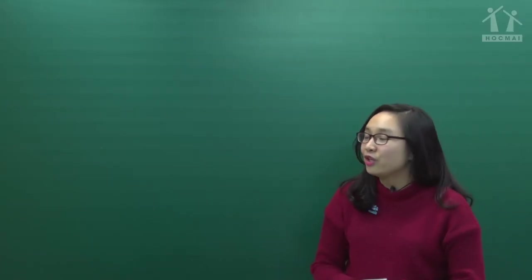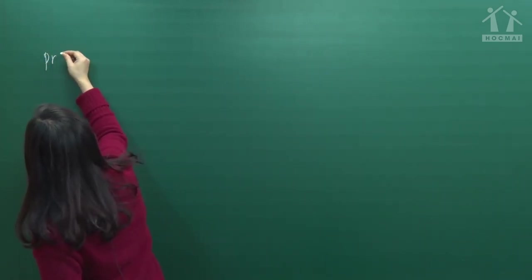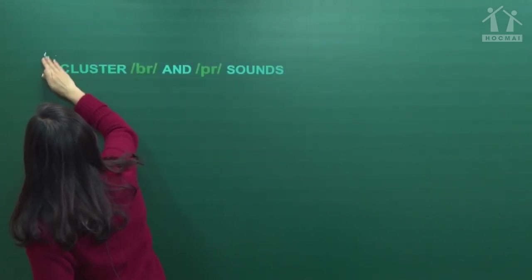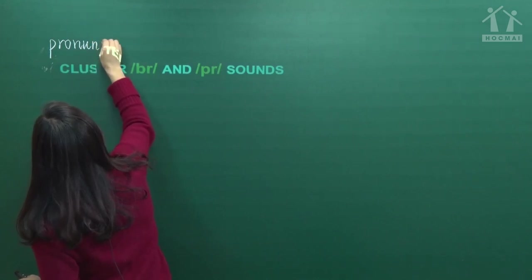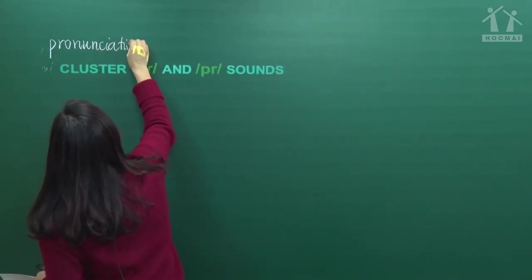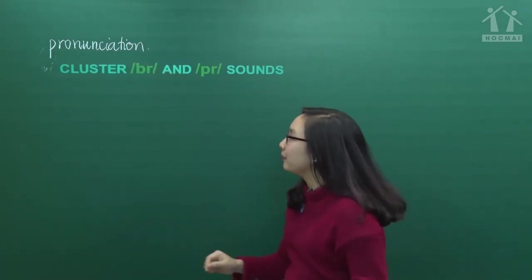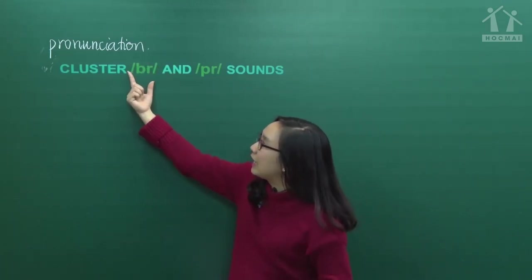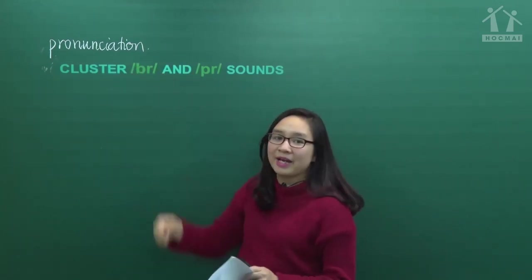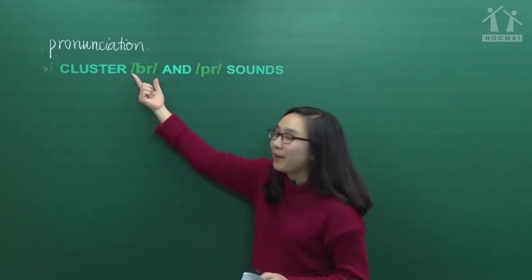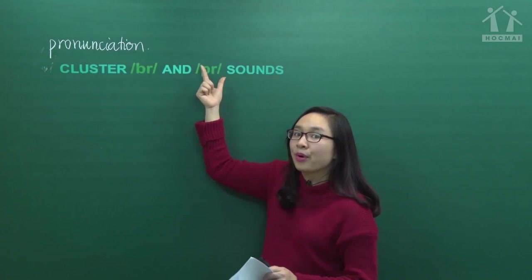Now we go to the next part: Pronunciation. Phần phát âm - hôm nay chúng ta sẽ tập trung về 2 âm: 'br' and 'pr'. Các bạn cần phải phân biệt 2 âm này. Cả lớp đọc theo cô.